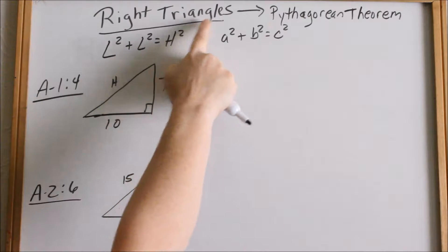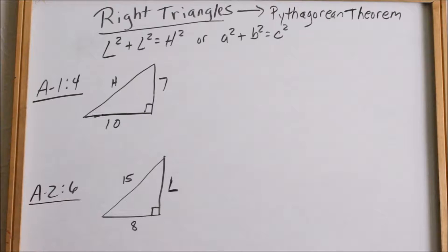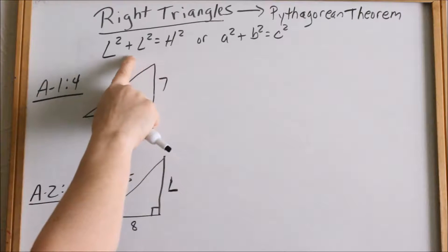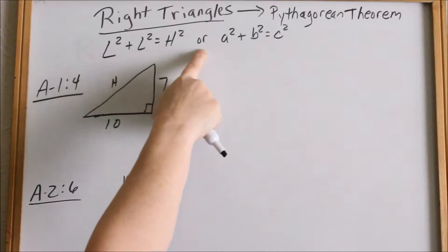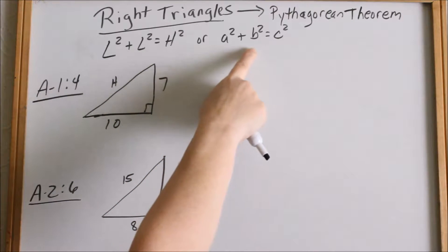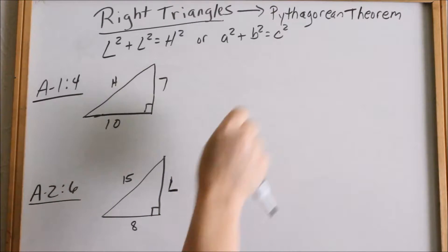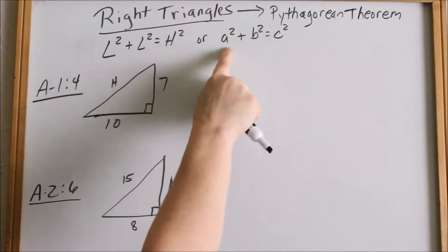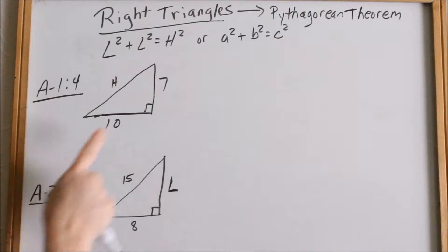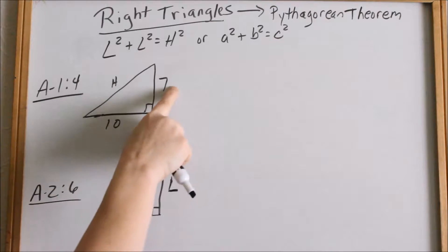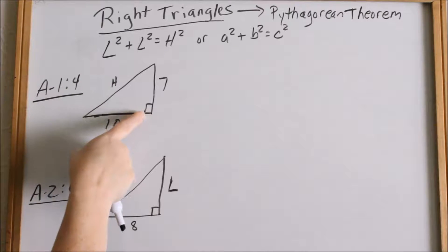Anytime you have a right triangle, you can use the Pythagorean Theorem to solve for any of the sides. Remember, Pythagorean Theorem is leg squared plus leg squared equals hypotenuse squared, or A squared plus B squared equals C squared. You'll see it this way on the SAT or any standardized test. A and B represent the legs, and C is the hypotenuse. In a right triangle, the legs are on each side of the 90-degree angle, and the hypotenuse is always across from the right angle.